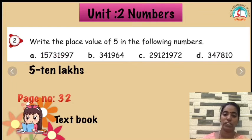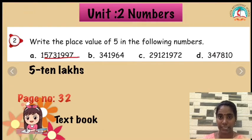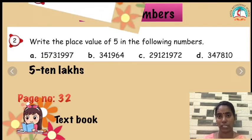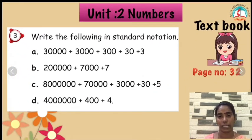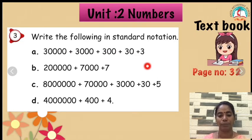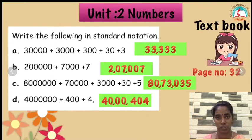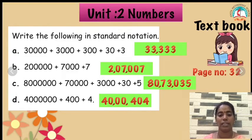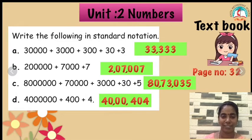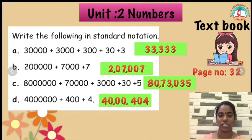The next one: we are going to see how to write in standard notation. What is meant by standard notation? You have to write all the numbers together. Now, look at here — you can write 33,333 and check your answers, children. Quickly write now, children.